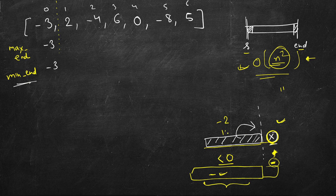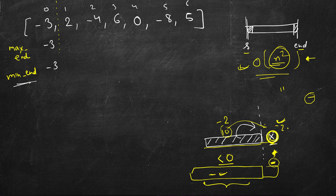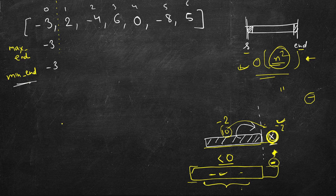For example, if max ending here was 10 and current element is minus two, the result is minus 20 — even worse. But if we tracked the minimum, say it was a large negative value, multiplying by minus two doubles the magnitude and flips the sign, giving a large positive value. That's why we track the minimum — it's crucial when the current element is negative.